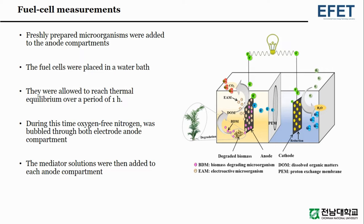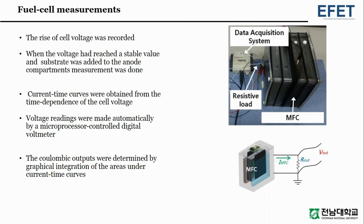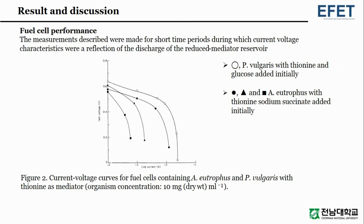Freshly prepared microorganisms were added to the anode compartments. The fuel cells were placed in a water bath and allowed to reach thermal equilibrium over a period of one hour. During this time, oxygen-free nitrogen was bubbled through both electrode anode compartments. The mediator solutions were then added to each anode compartment. The rise of cell voltage was recorded; when the voltage reached a stable value, substrate was added to the anode compartments. Current-time curves were obtained from the time dependence of the cell voltage. Readings were made automatically by a microprocessor-controlled digital voltmeter, and the coulombic outputs were determined by graphical integration of the areas under current-time curves.